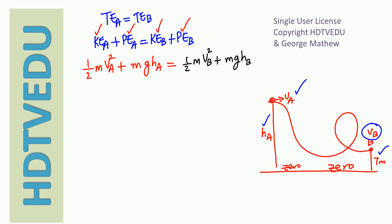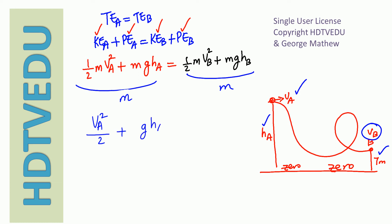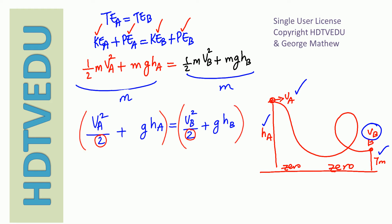As you can see, the mass cancels out. Dividing both sides by m, we get: speed at A squared divided by 2, plus g times height of A, equals speed at B squared divided by 2, plus g times height of B. To get rid of the division by 2, we multiply throughout by 2, giving us: speed at A squared plus 2g times height of A equals speed at B squared plus 2g times height of B.